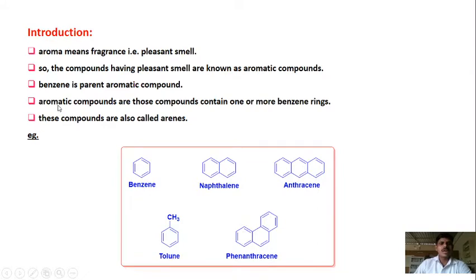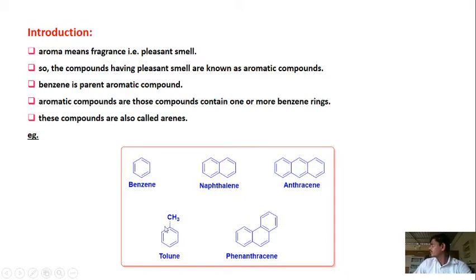These compounds are also known as arenes. These are some examples of aromatic compounds. The basic parent unit is benzene. When two benzene rings are attached to each other, naphthalene is formed. When three benzene rings are attached to one another, such a compound is called anthracene. When there is a methyl substitution at the benzene ring, this compound is called toluene. If two benzene rings are attached and one benzene ring is attached at the ortho and meta position, such a compound is called phenanthrene.